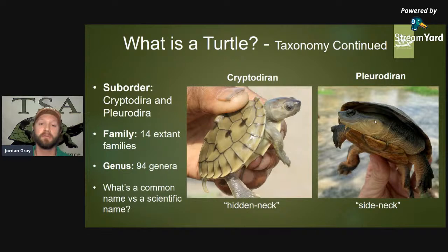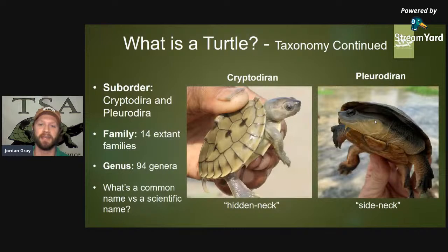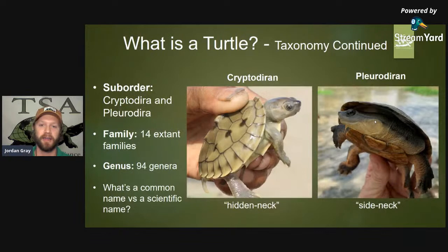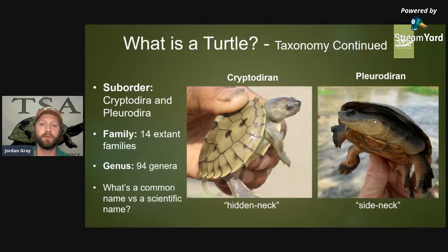Next is the family. There are 14 extant — meaning living — families of turtles and tortoises. Then we get to genus. A red-eared slider is in the genus Trachemys; the radiated tortoise of Madagascar is in the genus Astrochelys. There are 94 genera — genus is singular, genera is plural — and each gets a different scientific name, also called their Latin or binomial name.